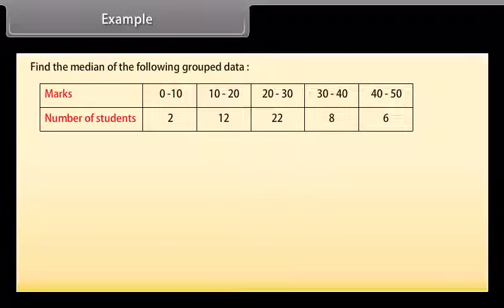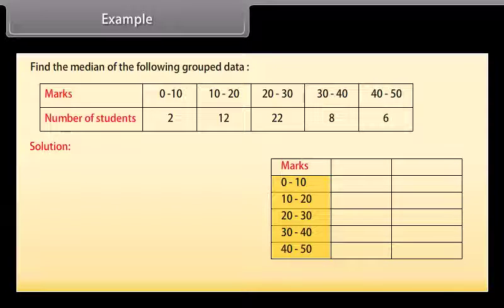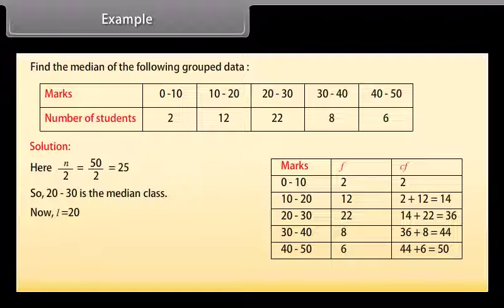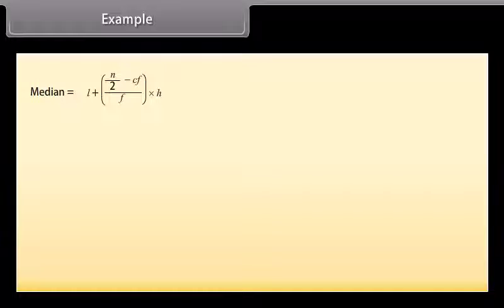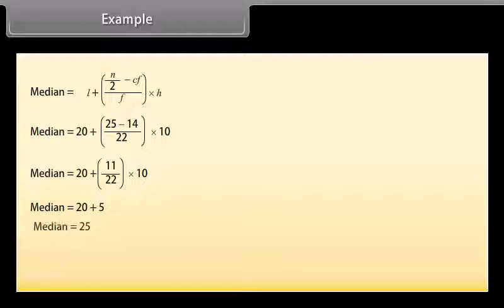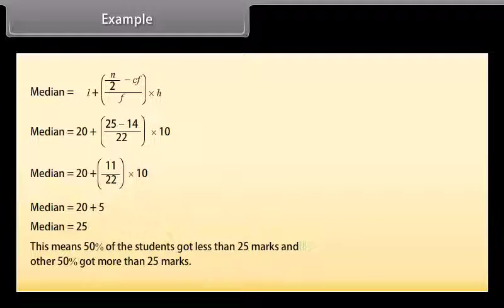Find the median of the following grouped data. Solution: Write the given marks and frequencies in the first two columns, and find the cumulative frequency in the third column. N divided by 2 equals 50 divided by 2, which is 25. So the class 20 to 30 is the median class. L equals 20, H equals 10, CF equals 14, F equals 22. Using the formula: 20 plus (25 minus 14) divided by 22, multiplied by 10, equals 20 plus 110 divided by 22, equals 20 plus 5, equals 25. This means 50% of students got less than 25 marks and the other 50% got more than 25 marks.